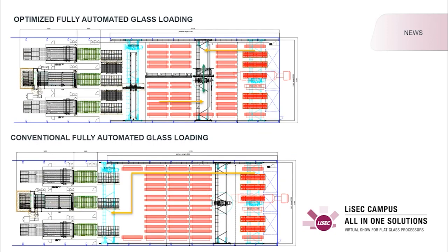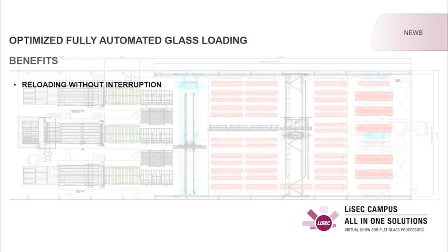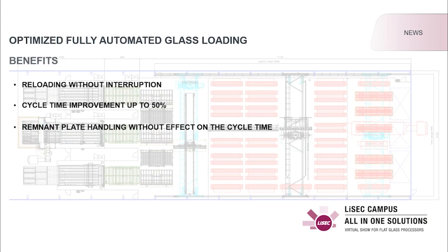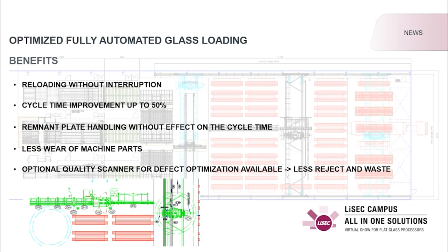Compared to a conventional glass stock, you have less travelways with the optimized solution. Due to the pre-stored stock sheets in the vertical remnant plate buffer RPS, you can reload your glass stock without any interruption. Due to the short travelways and shorter movements, you have a cycle time improvement of up to 50% and less wear of machine parts. If you combine this solution with our transport table TFR with pass function, you can also handle remnant plates without any effects on the cycle time. Optionally, we include a quality scanner for defect optimization in the RTV transport section, which can reduce reject and waste dramatically.